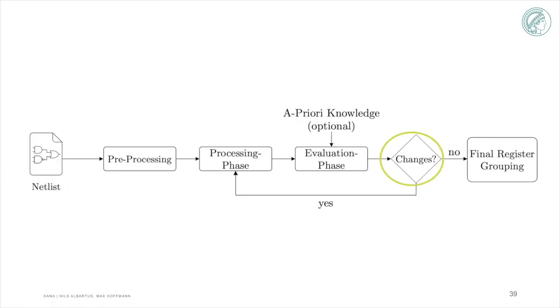Once the evaluation phase outputs the single condensed grouping, we compare the grouping to the previous one. If new registers have been created, we set the current grouping as a new initial grouping in the processing phase and repeat the process until no more changes occur. DANA then outputs the final register grouping.